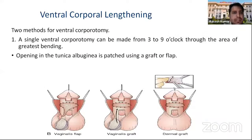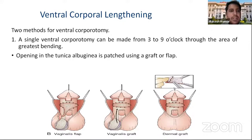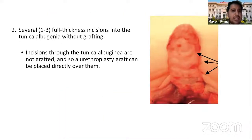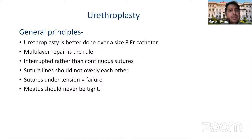Ventral corporeal lengthening: there are two methods. A single ventral corporatomy can be made from 3 to 9 o'clock at the area of greatest bending, then the opening in the tunica albuginea is patched using a graft or flap — tunica vaginalis or dermal graft. In the second method, several one-to-three full-thickness incisions are made into the tunica albuginea without grafting. General principles for urethroplasty: it should be done over an appropriate-size catheter, in multiple layers with interrupted rather than continuous sutures; suture lines should not overlie each other, and sutures under tension increase failure risk.